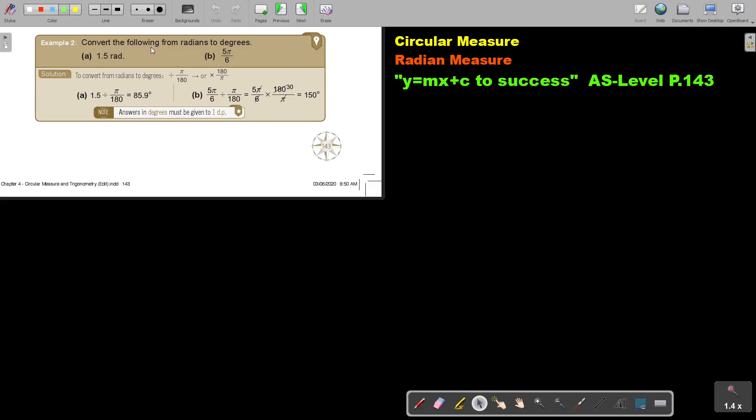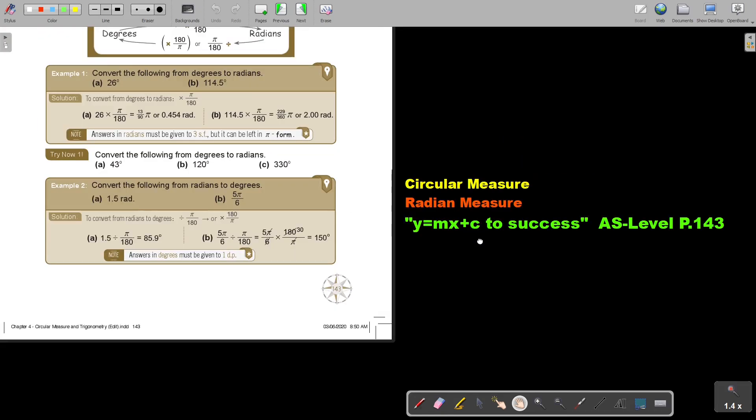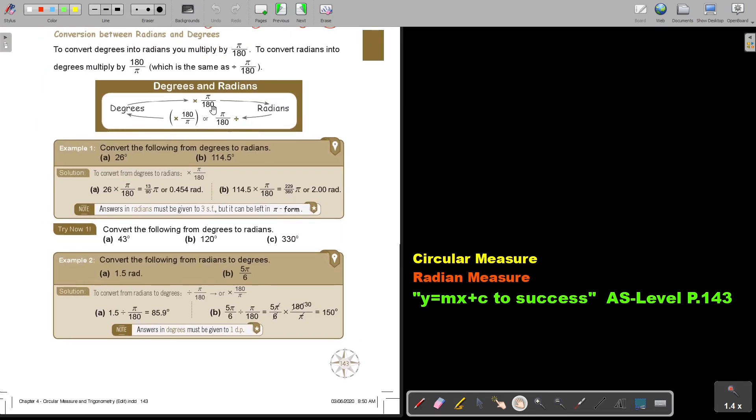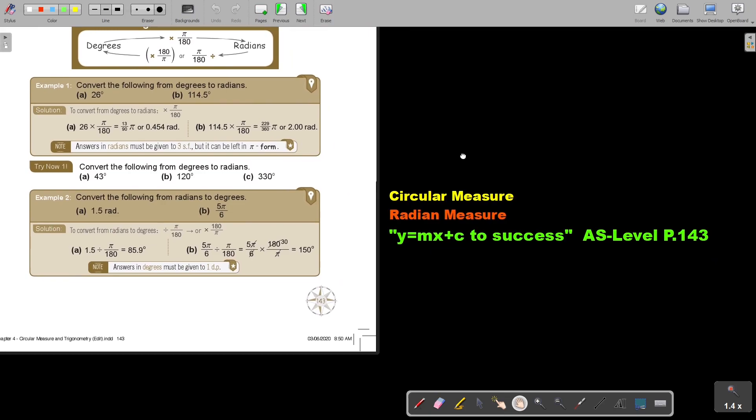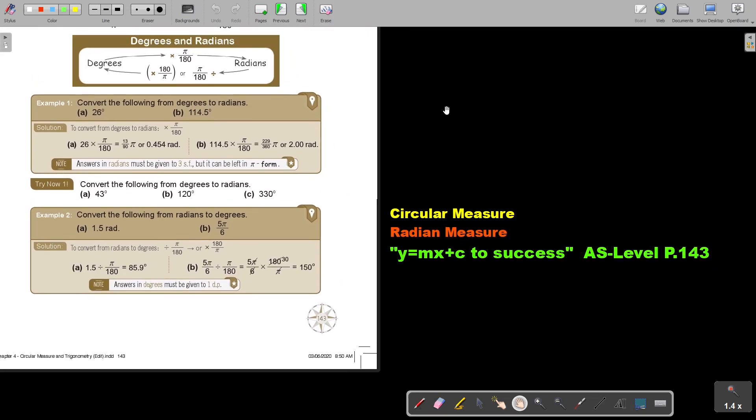Convert the following from radians to degrees. Now I want to take you back to this table. You can either divide by π over 180 or multiply by 180 over π. It doesn't matter. I want you to take your calculator and press both and see that you arrive at the same answer. Let's move the table aside.